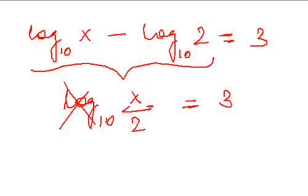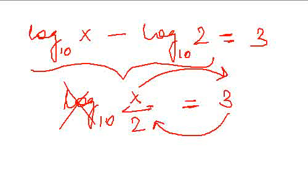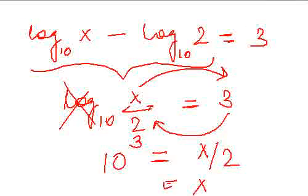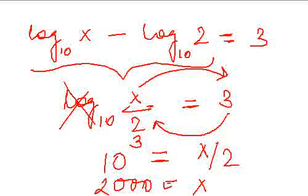If you have to get rid of this log, what you do is you just switch the positions of 3 and x over 2. So you can think of it as 10: in place of x over 2 you write 3, in place of 3 you write x over 2. So what value of x do you get from here? 2 times 10 to the power 3, that is 2000. This is all we have on logs.